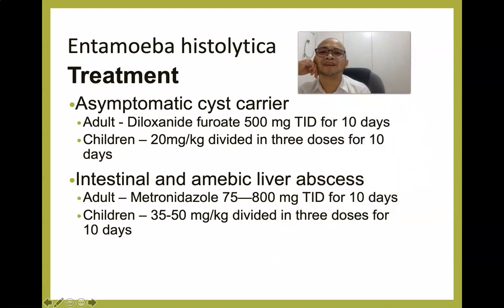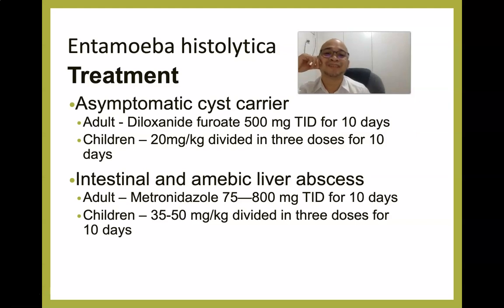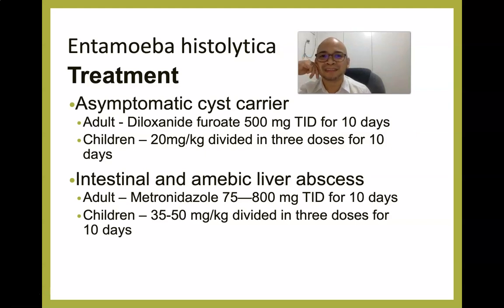Treatment for asymptomatic carriers: diloxanide furoate 500 mg twice a day for 10 days for adults; divided into three doses for 10 days for children. For intestinal amebiasis and amoebic liver abscess, the drug of choice is metronidazole — 750–800 mg TID for 10 days. The most common brand name of metronidazole is Flagyl.